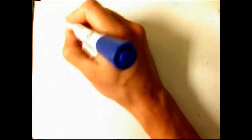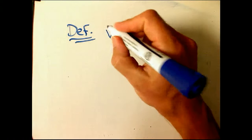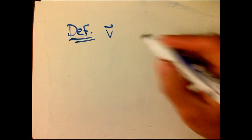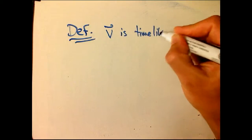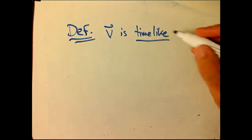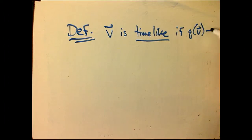Let me give you a definition. A vector v in Minkowski space is called timelike, and this is according to my sign convention that I get from Wheeler, if the scalar product of v with itself, q of v, is negative.